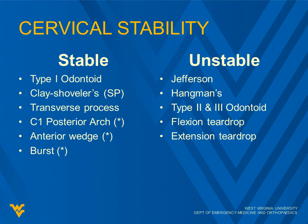Stable fractures include: type 1 odontoid, clay shoveler (a spinous process fracture), transverse process fracture, C1 posterior arch fracture, anterior wedge, and burst fractures. Those last three have asterisks because they may be stable but have a high association with spinal cord issues. Unstable fractures include: Jefferson fracture, Hangman's fracture, type 2 and 3 odontoid, flexion teardrop, and extension teardrop.